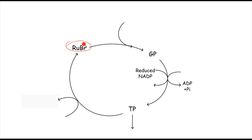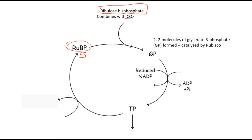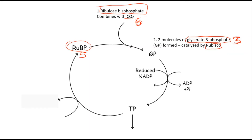The light-independent reaction, which comes after the light-dependent reaction, is also called the Calvin cycle. We start with RUBP — ribulose bisphosphate — a five-carbon compound. CO2 combines with RUBP, forming a six-carbon compound, which immediately splits into two molecules of glycerate 3-phosphate (GP), each a three-carbon compound. This reaction is catalysed by the enzyme rubisco.